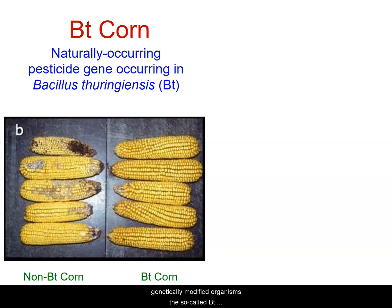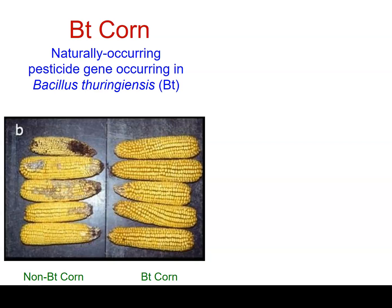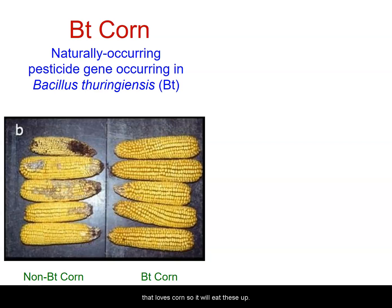The so-called Bt corn. Bt corn is corn that has essentially bacterial genes injected into its own genome. You can see that non-Bt corn on the left is sort of eaten up, and there's a moth larvae that loves corn, so it will eat these up.